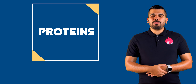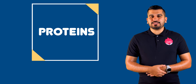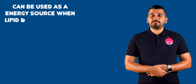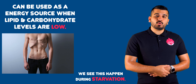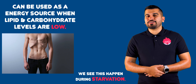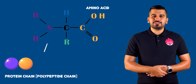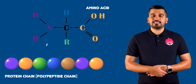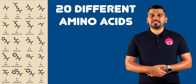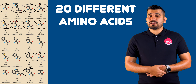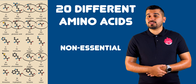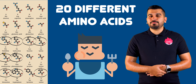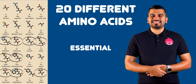Our final biological molecule is proteins. These molecules are essential for growth and repair. They can be used as a source of energy if lipid and carbohydrate levels are low. Each protein is made from subunits called amino acids. There are 20 different types of amino acids. Some are made by the body and are referred to as non-essential, and some are obtained from our food, which are referred to as essential.